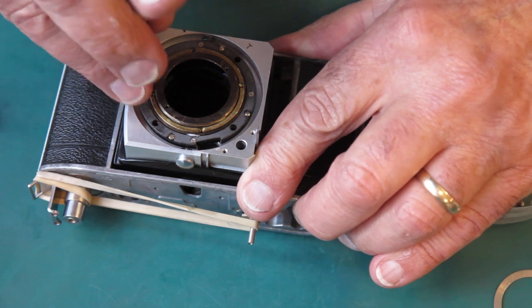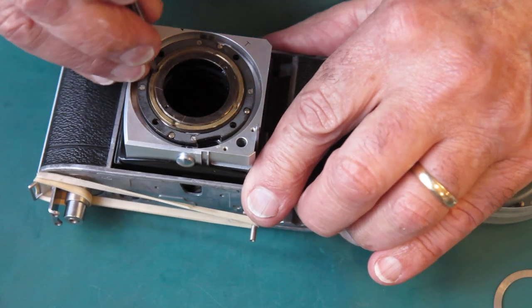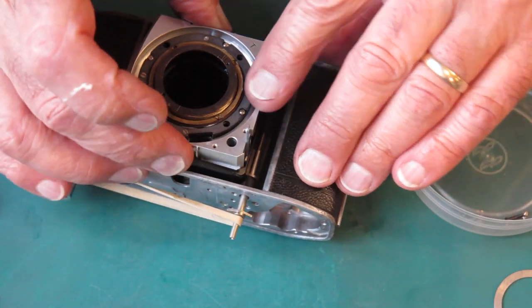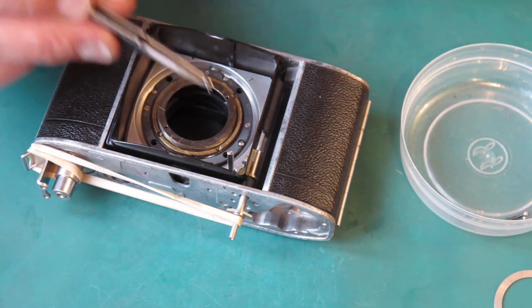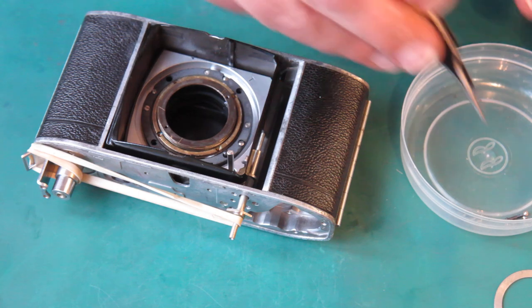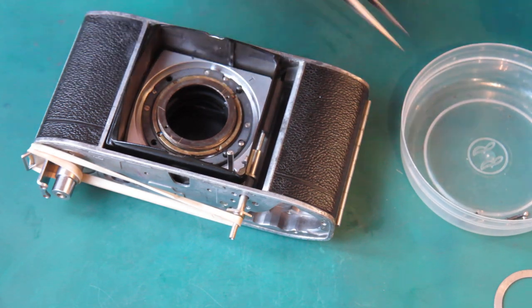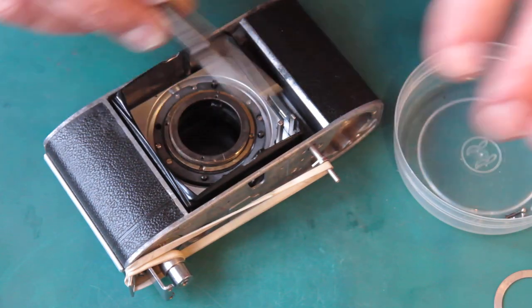All right, so we get those four screws tightened up. Check the action—it's nice and smooth still. If I collapse the front, we've got four long black screws go through the remaining holes and they will hold the bellows to the back of the front standard.